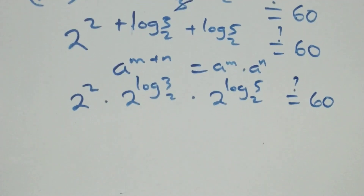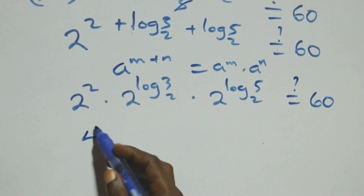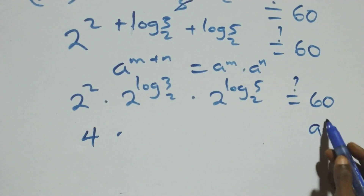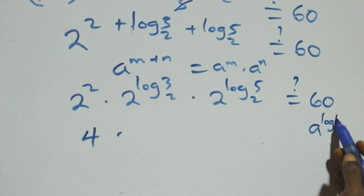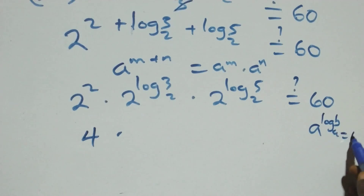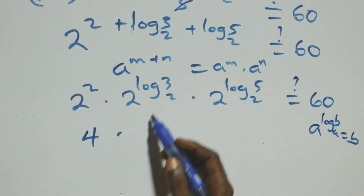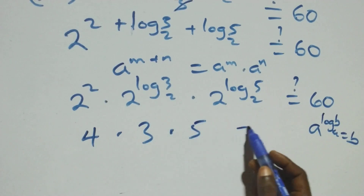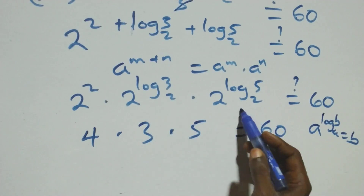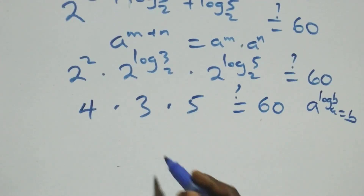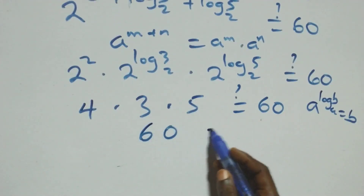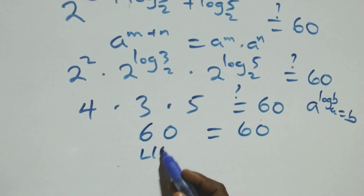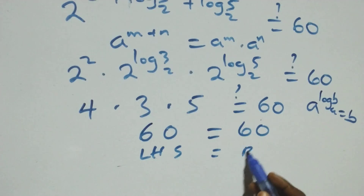Now 2 squared is 4. And it follows that a raised to power log b to base a equals b. So 2 raised to log 3 base 2 equals 3, and 2 raised to log 5 base 2 equals 5. Therefore we have 4 times 3 times 5, which is 4 times 15 equals 60, and 60 equals 60. The left hand side equals the right hand side.